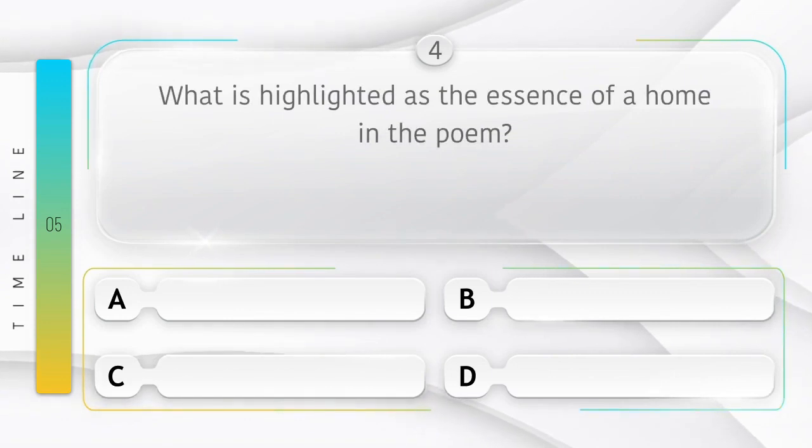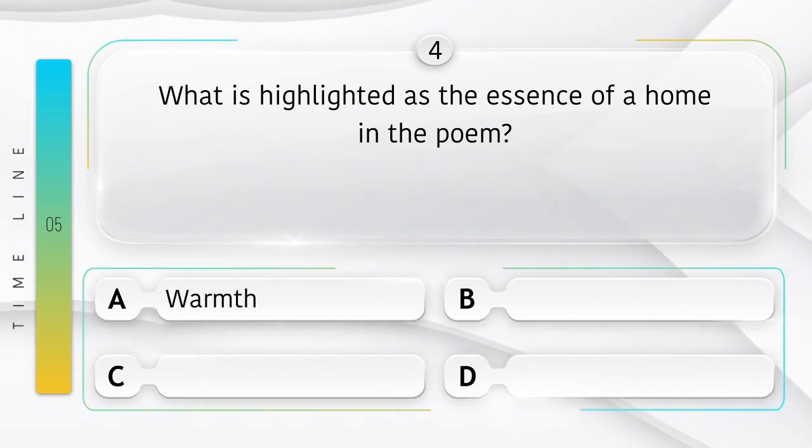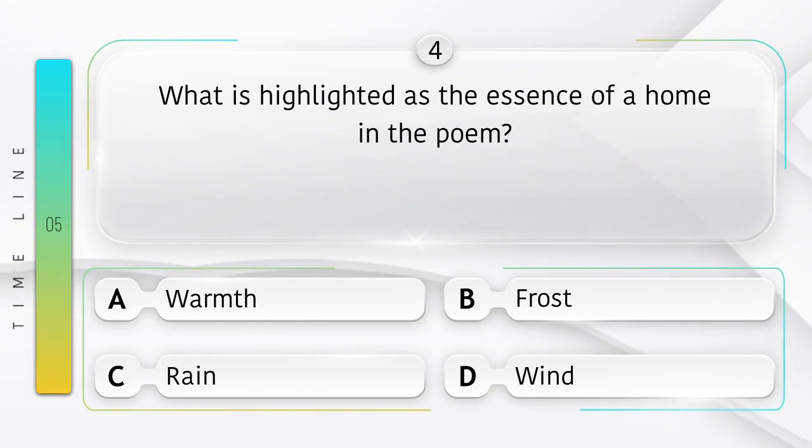What is highlighted as the essence of a home in the poem? Options are A. Warmth, B. Frost, C. Rain, D. Wind. Answer is option A, Warmth.